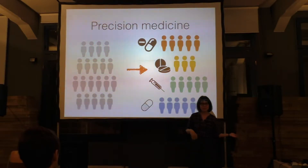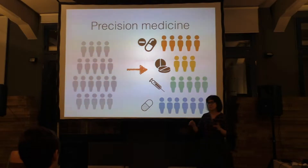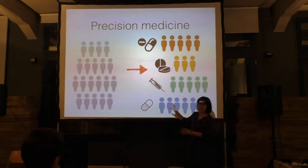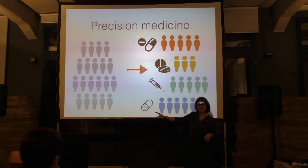So what we really want is to find groups of people and apply specific treatments to them. This is something called precision medicine. The older term is personalized medicine, but really it's not about individual persons — it's about finding groups of people and finding the treatment that works for them.